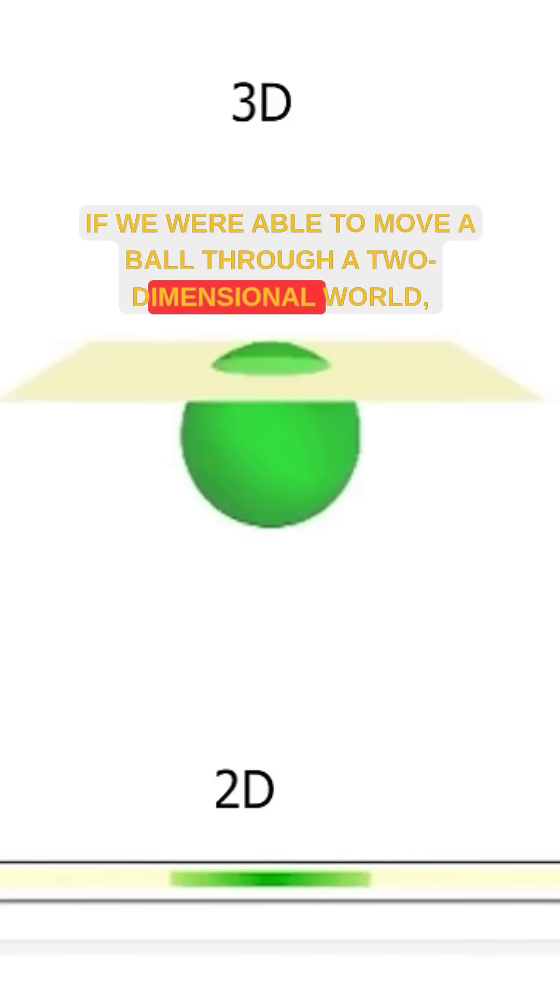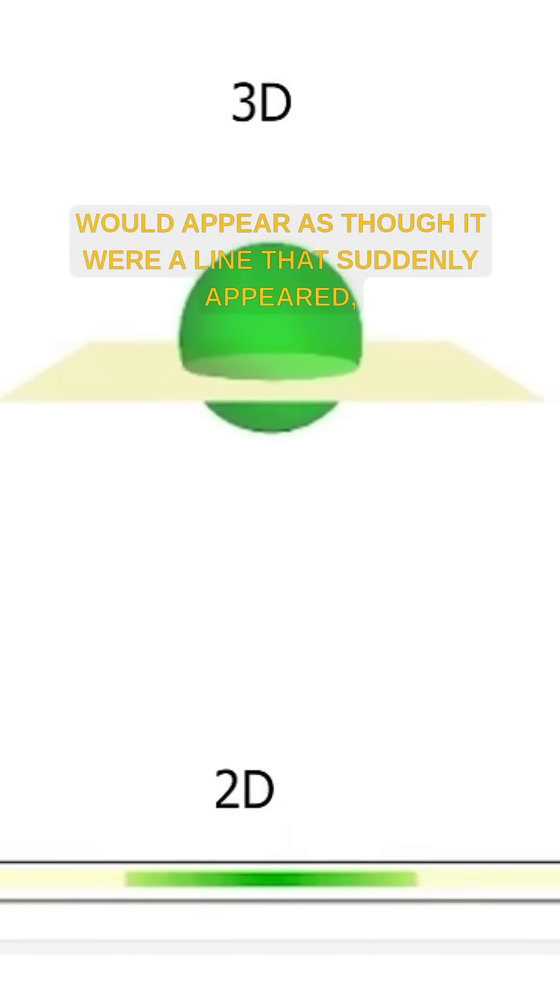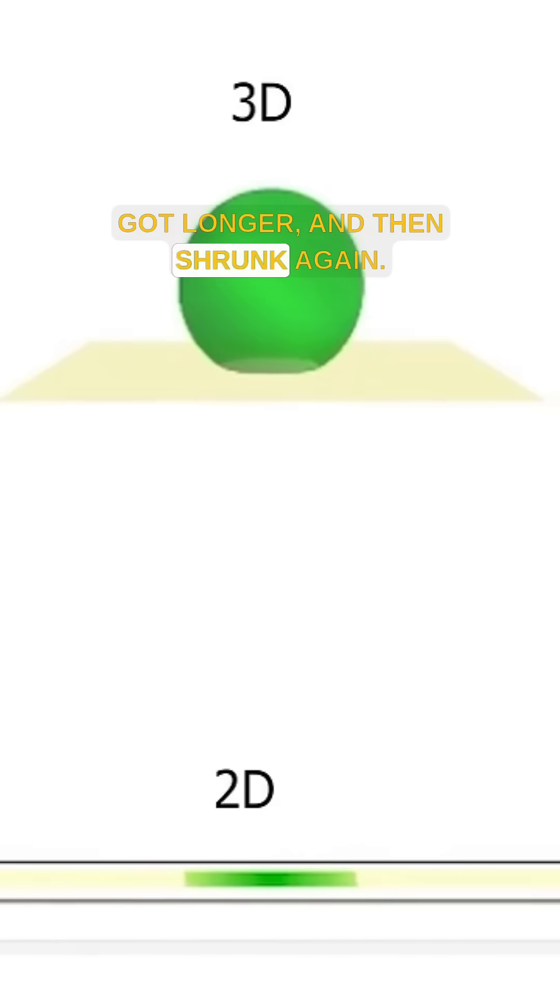If we were able to move a ball through a two-dimensional world, it would appear as though it were a line that suddenly appeared, got longer, and then shrunk again.